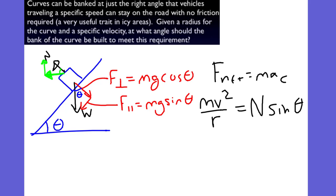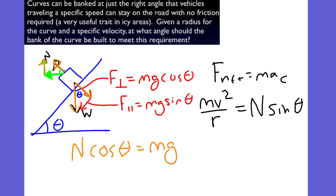We've got to figure out what this normal force is. The normal force is going to be equal and opposite to that force perpendicular. That force — or the normal force in this direction — is going to be equal and opposite to the weight, the mass times gravity. What we know is the normal force cosine of theta is going to be equal to the mass times gravity.